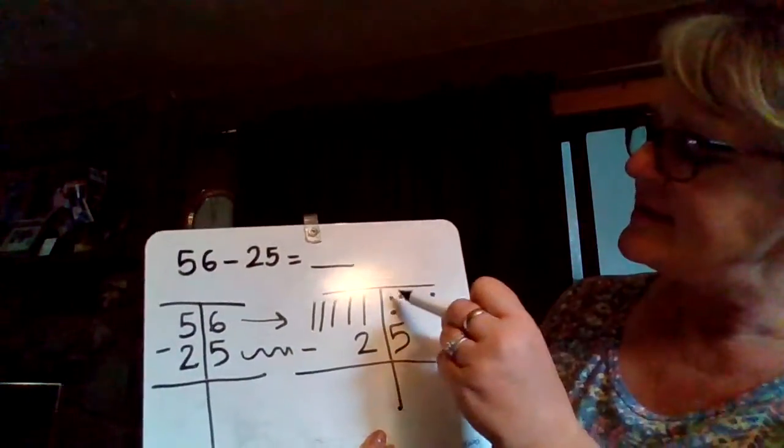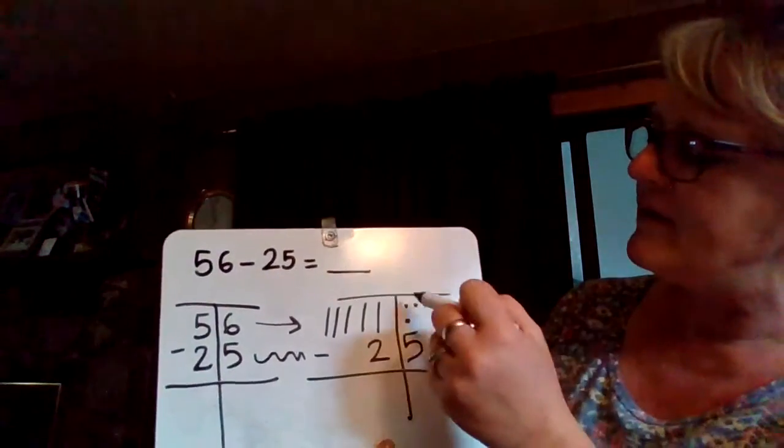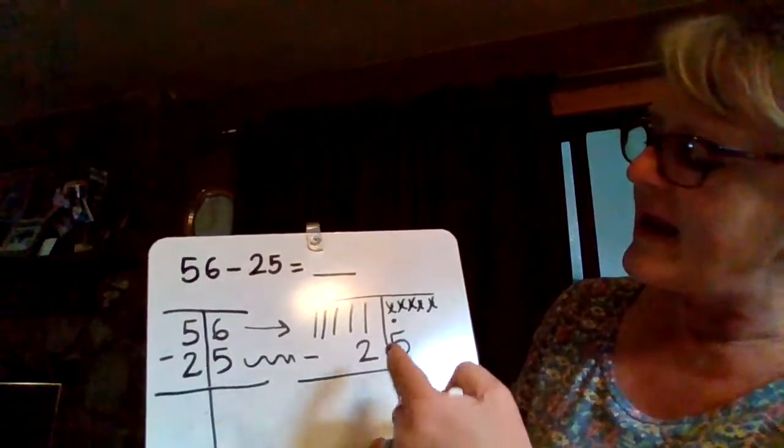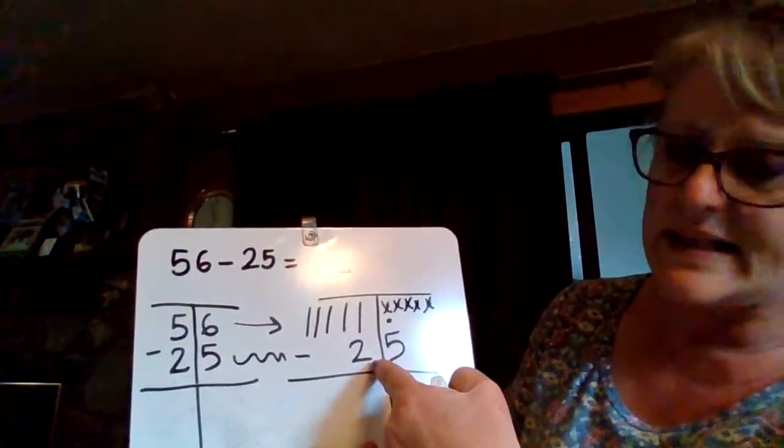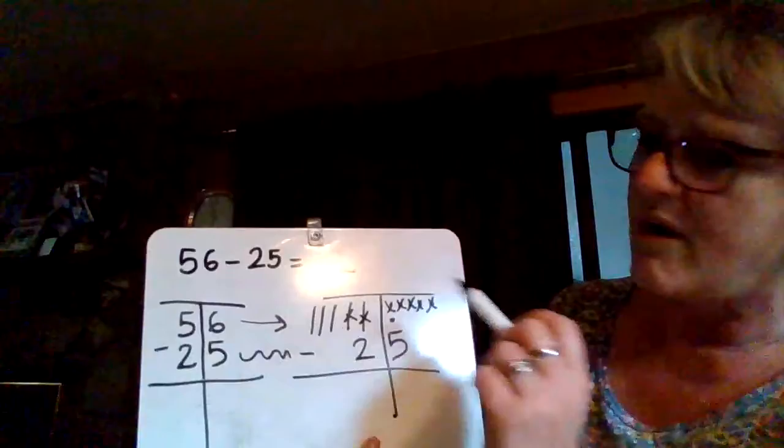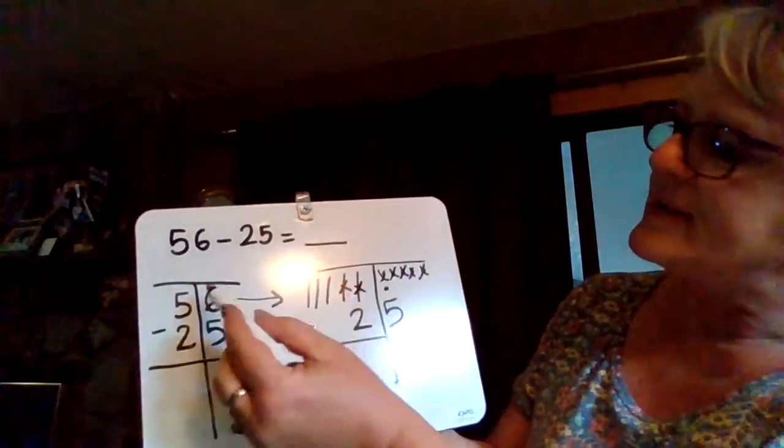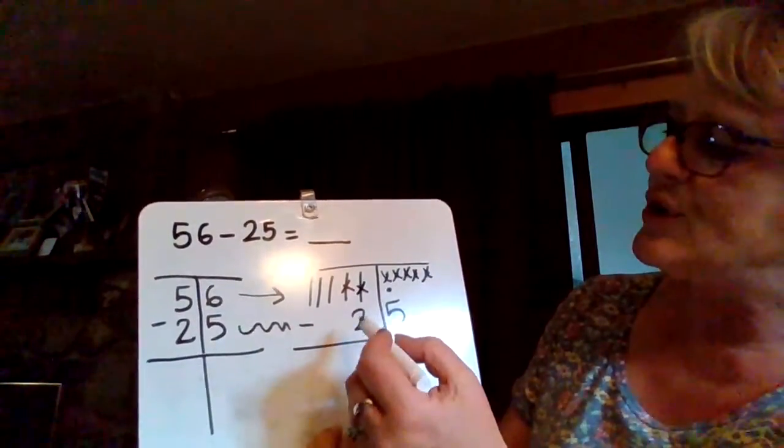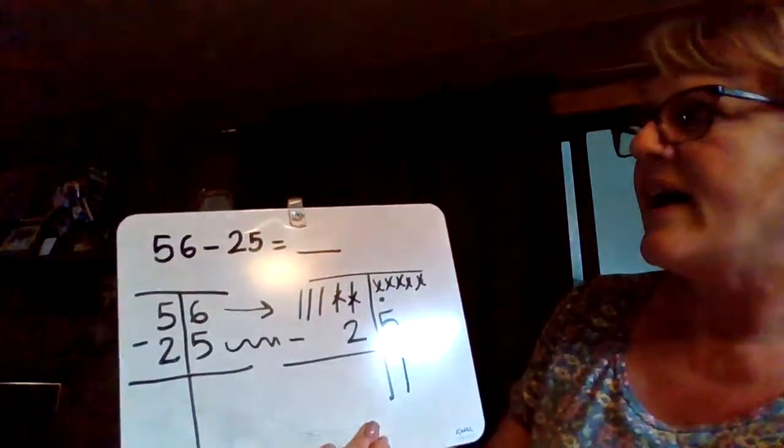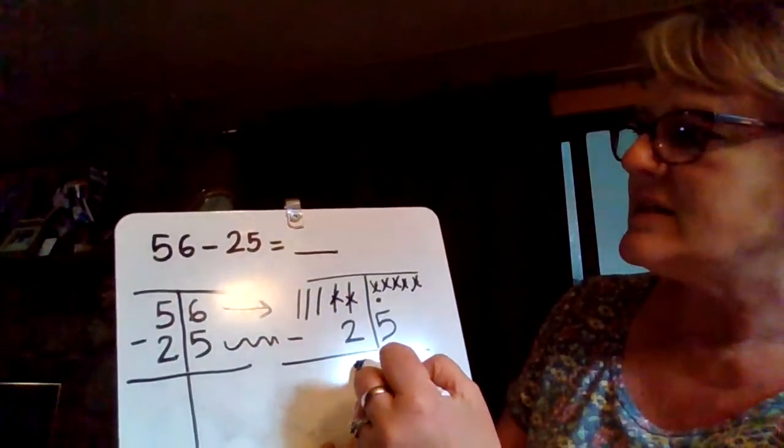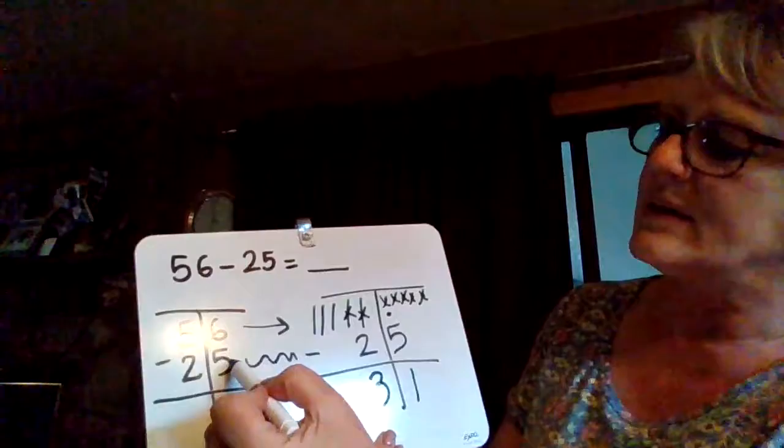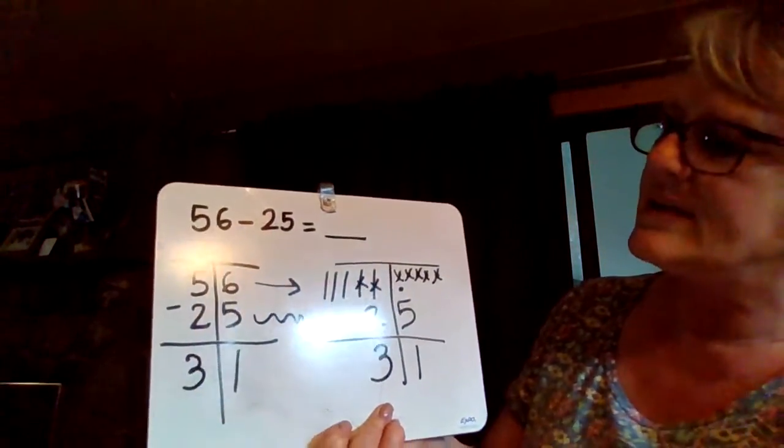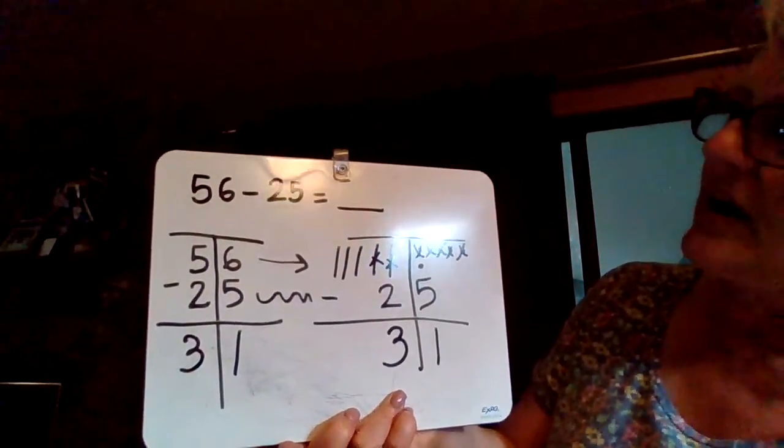Now we are going to take away 25. Okay, so we have 6 and we're going to take away 5 - that's going to work right there. And we have 5 tens, so we need to take away 2 tens. Awesome. So 6 take away 5 is 1, and 5 tens take away 2 tens is 3 tens. So our answer is 31.